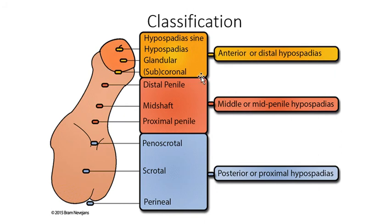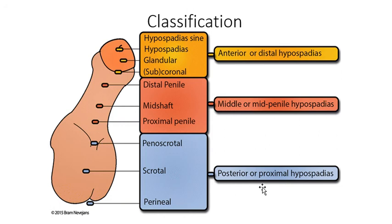Classification: anterior or distal hypospadias, middle hypospadias, and posterior hypospadias. Distal hypospadias includes glandular and coronal or subcoronal varieties. Middle hypospadias includes distal, mid-shaft, or proximal penile varieties. Posterior or proximal hypospadias has three varieties: penoscrotal, scrotal, or perineal.